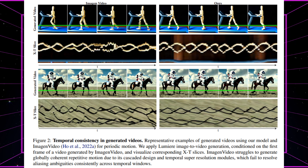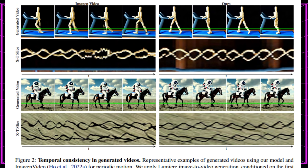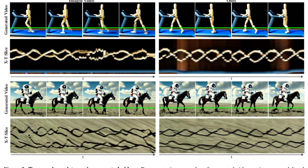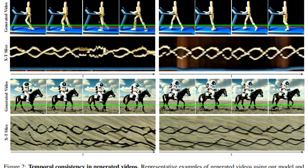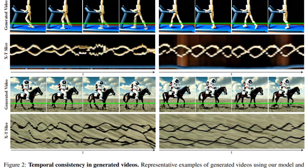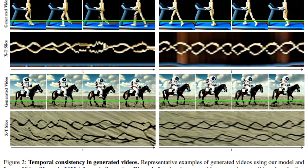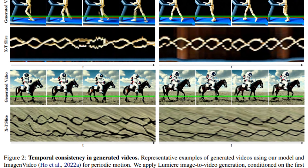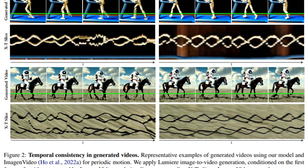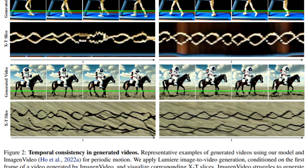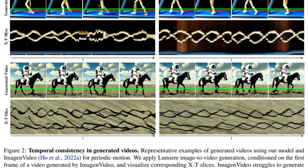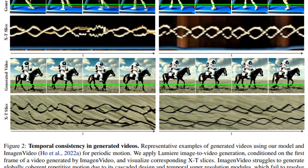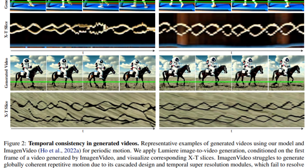Lumiere was also tested in detail against Imogen Video for creating moving videos from a series of still images. Imogen Video uses a complex method — it first draws a few key pictures, like the start and end of a movement, and then tries to fill in the rest. However, it sometimes gets confused, especially when the movement in the video repeats, like a person walking. It's like drawing the first and last step of a walk but then struggling to draw the steps in between accurately. Lumiere, on the other hand, looks at the first image and then tries to imagine and draw the entire movement sequence from start to finish in one go — like watching the first step of a walk and then being able to draw the entire walking sequence smoothly. When compared, Lumiere tends to create smoother, more natural-looking videos, especially for actions that repeat like walking or dancing.